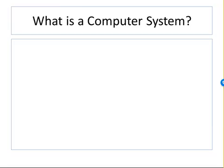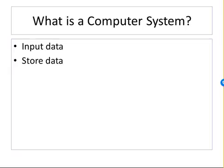A computer system has four basic characteristics. The first is the ability to input data. You might think input data can only mean keyboard and mouse, but there are many other ways — for example, a microphone to record your voice. It also needs to be able to store data, so there needs to be some form of data storage, most often a hard drive, SSD drive, or other storage device.